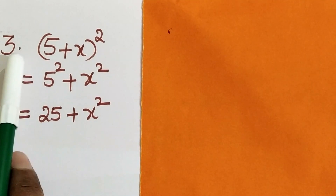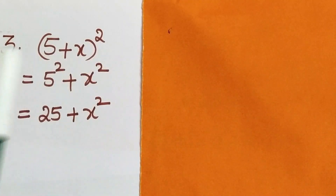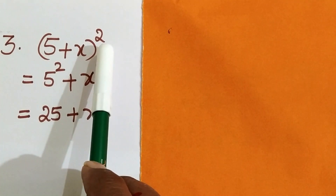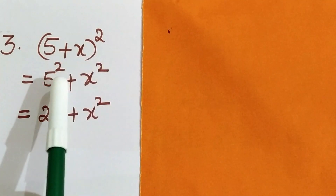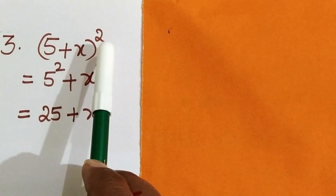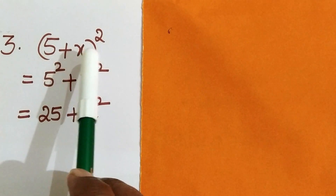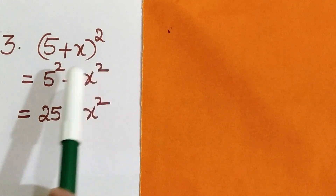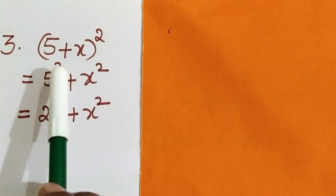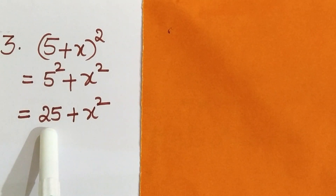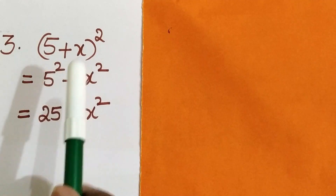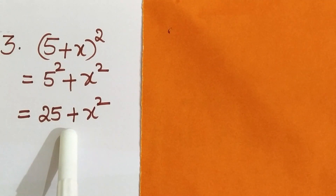Third question: (5 plus X) whole square. Usually students think the square is applicable for both 5 and X separately, so they write 5 squared plus X squared. You know that 5 squared is 5 times 5, which is 25, plus X squared. If you do the problem like this, it is a wrong procedure.